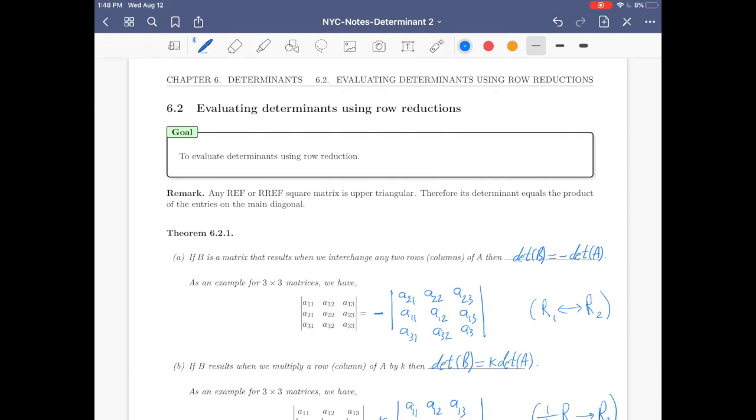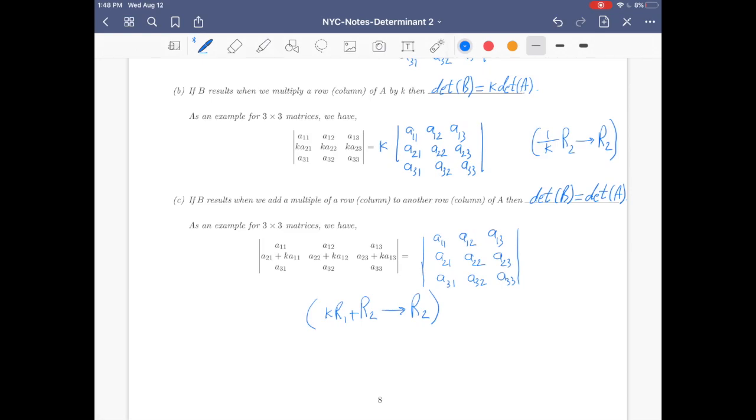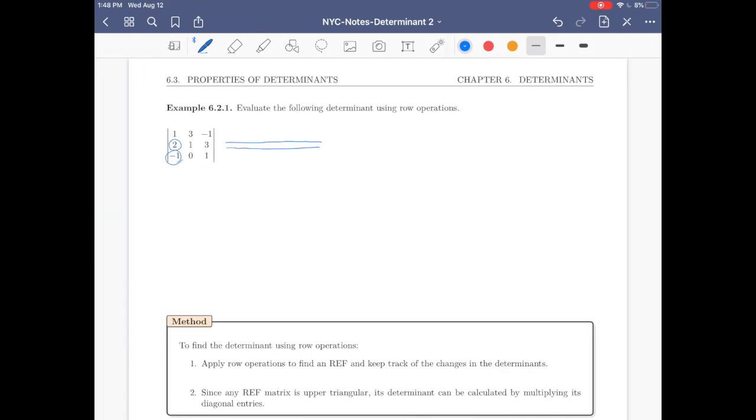This equals, because we're applying the third type operation, part C. Negative twice R1 plus R2 goes to R2, then R1 plus R3 goes to R3. First row the same, second row, 2 minus twice that, 1, 0. 1 minus 2 times 3, minus 5. 3 minus 2 times negative 1, 5.